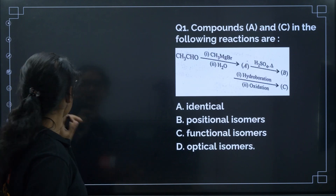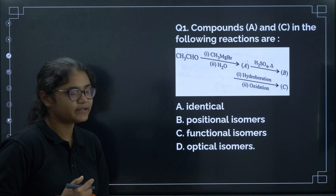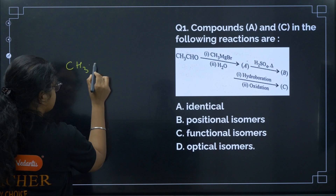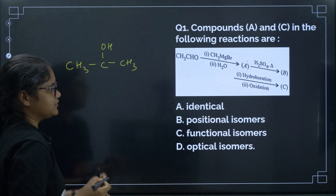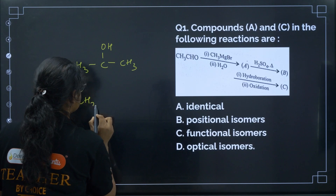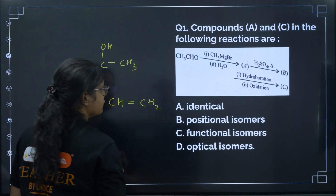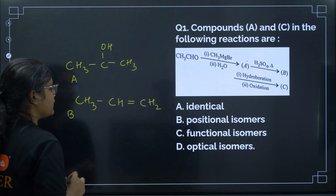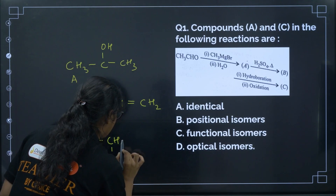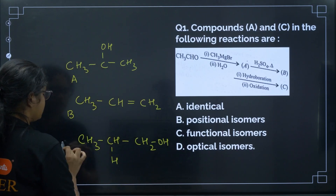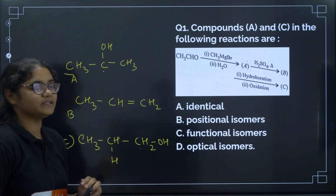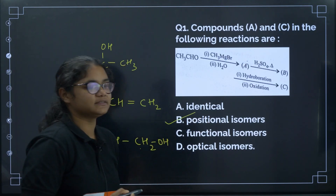The first question asks: compound A and C in the following reactions are? When CH3CHO is treated with a Grignard reagent, we get CH3C(OH)CH3 as product B. Then with H2SO4 and heat, dehydration gives CH3CH=CH2. Hydroboration-oxidation then performs anti-Markovnikov addition of water, giving CH3CH(CH2OH) as product C. Comparing A and C, the OH is in the second position in A and the first position in C — these are positional isomers. Correct answer: option B.